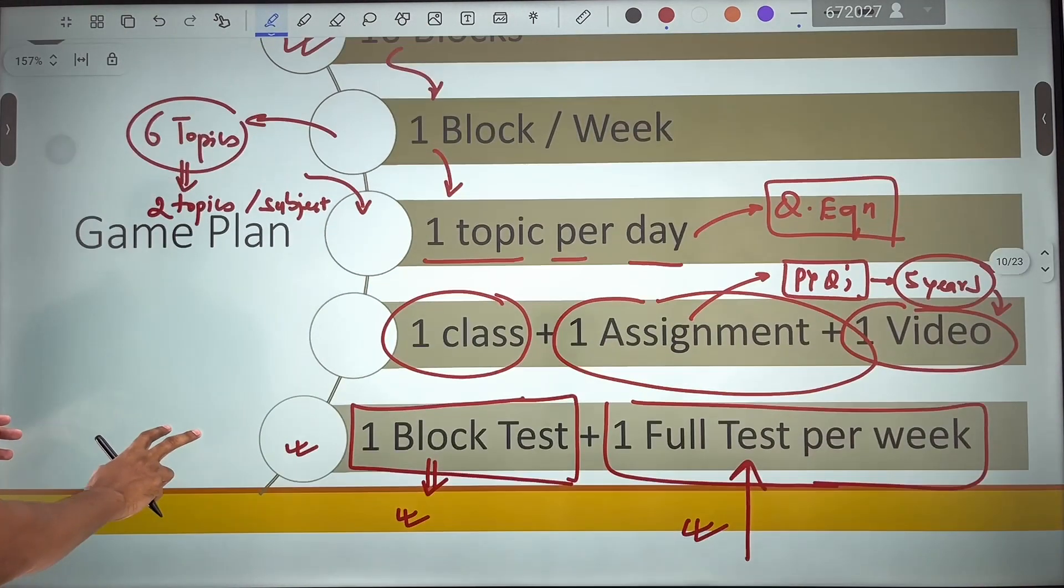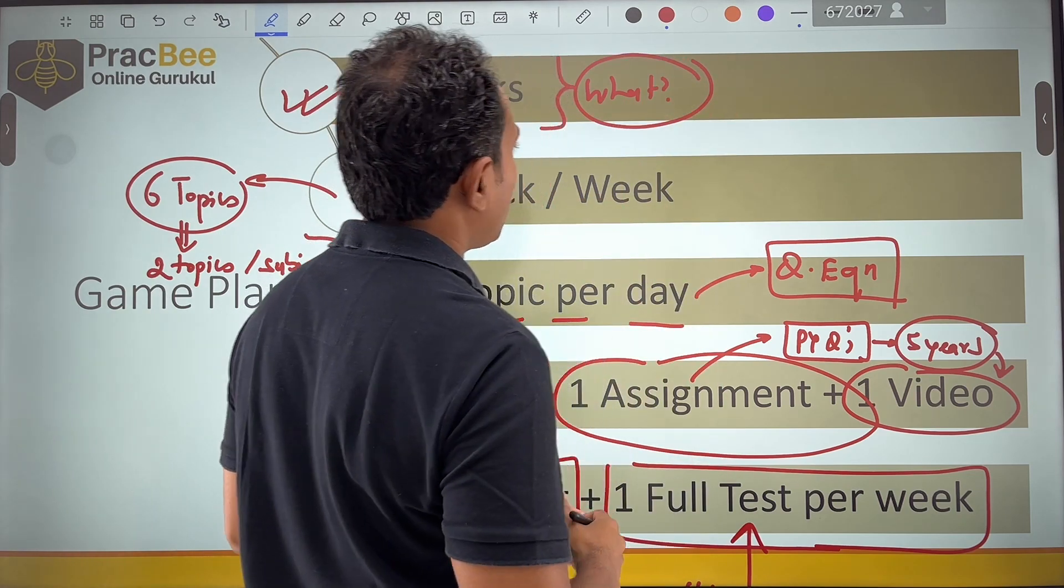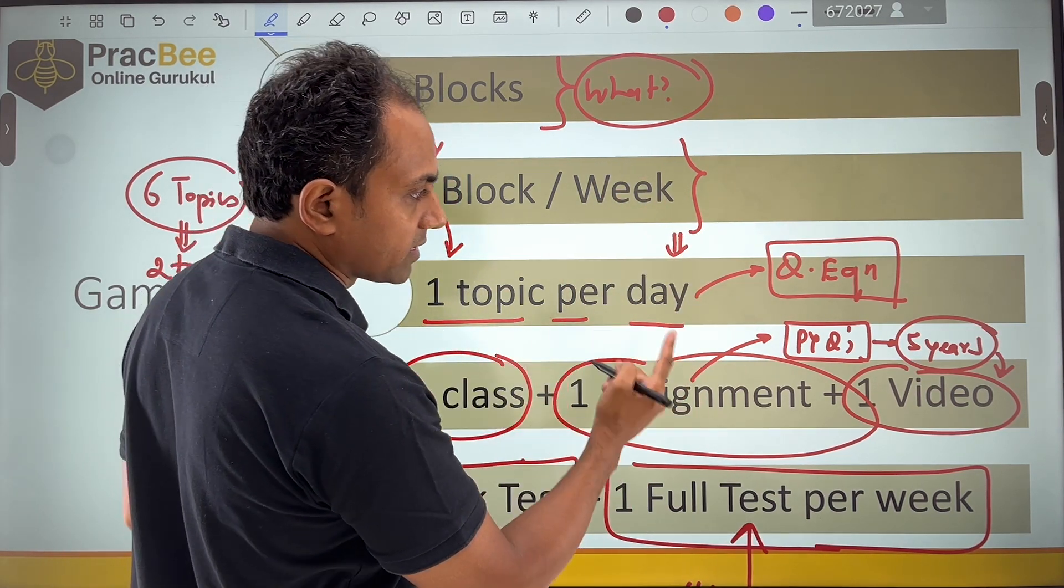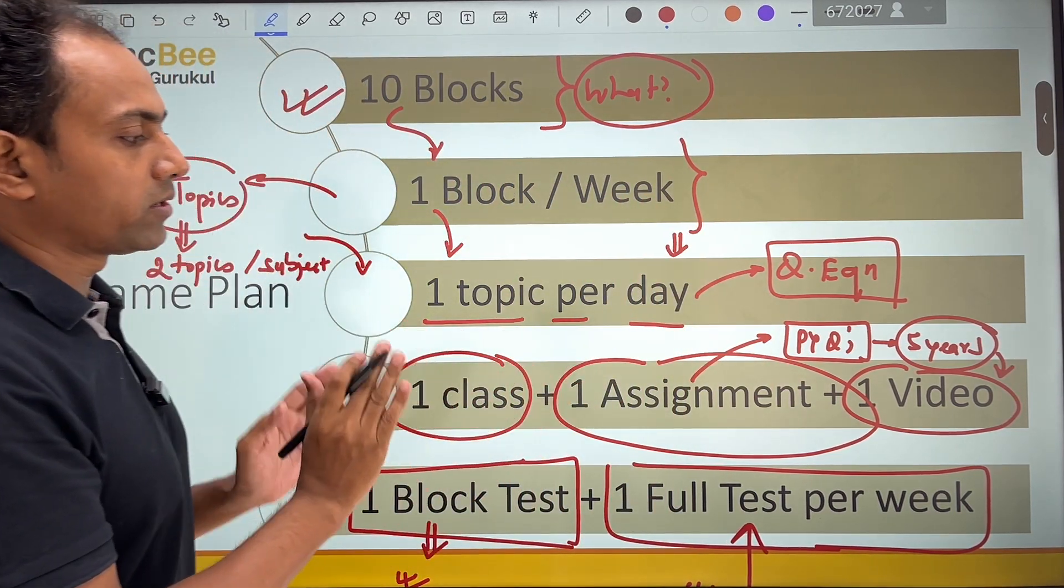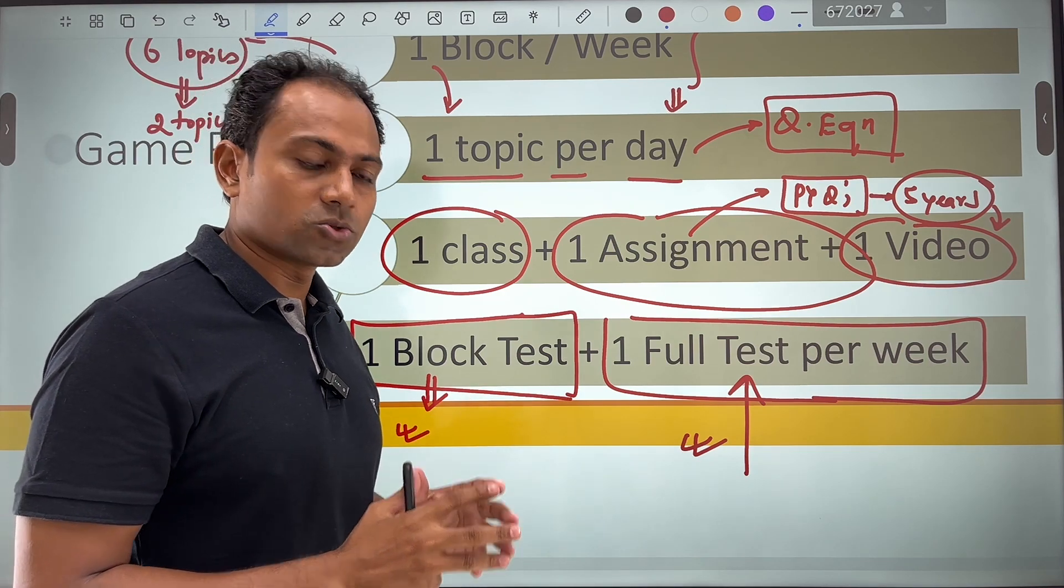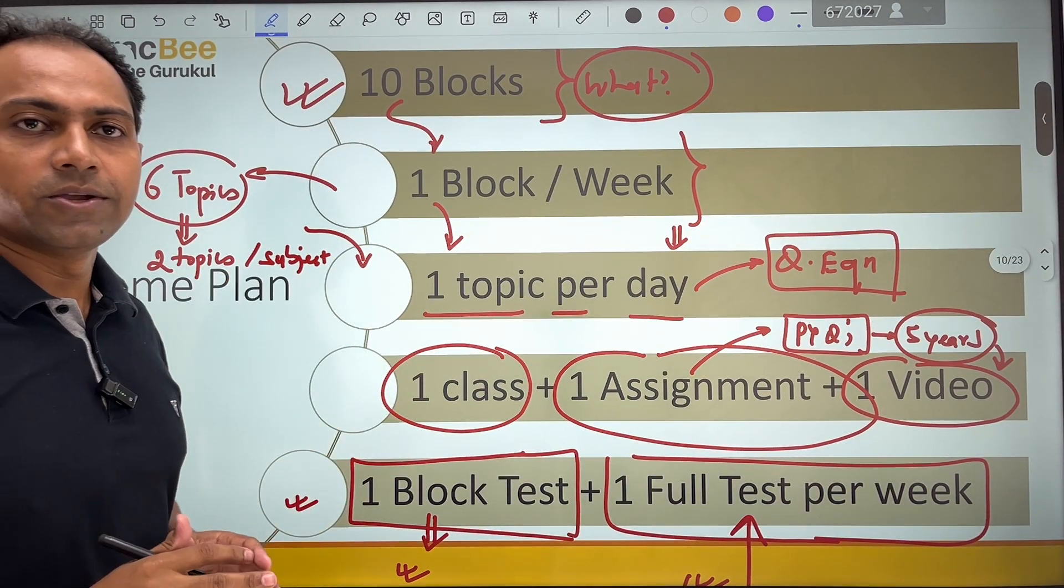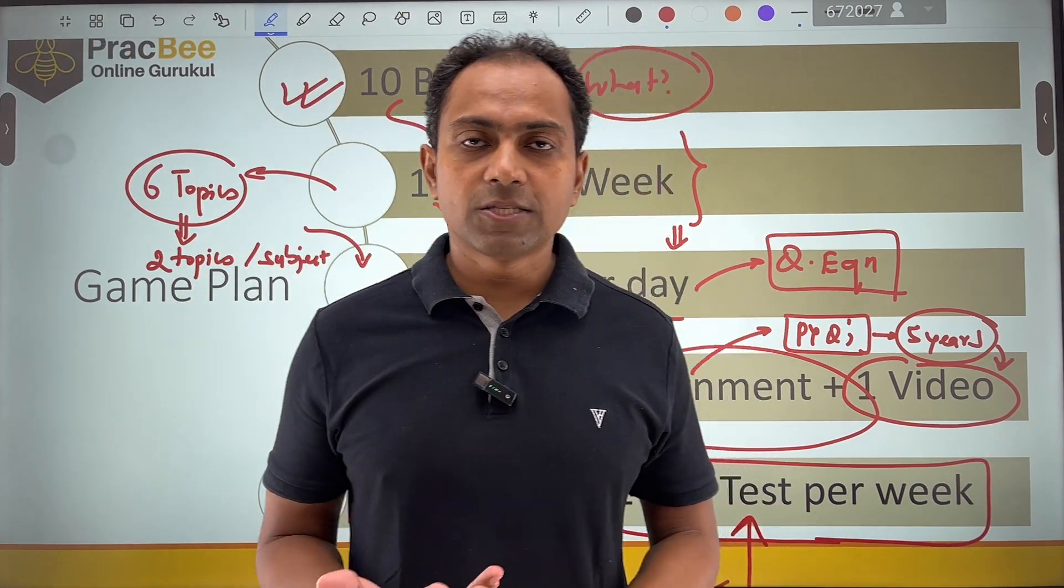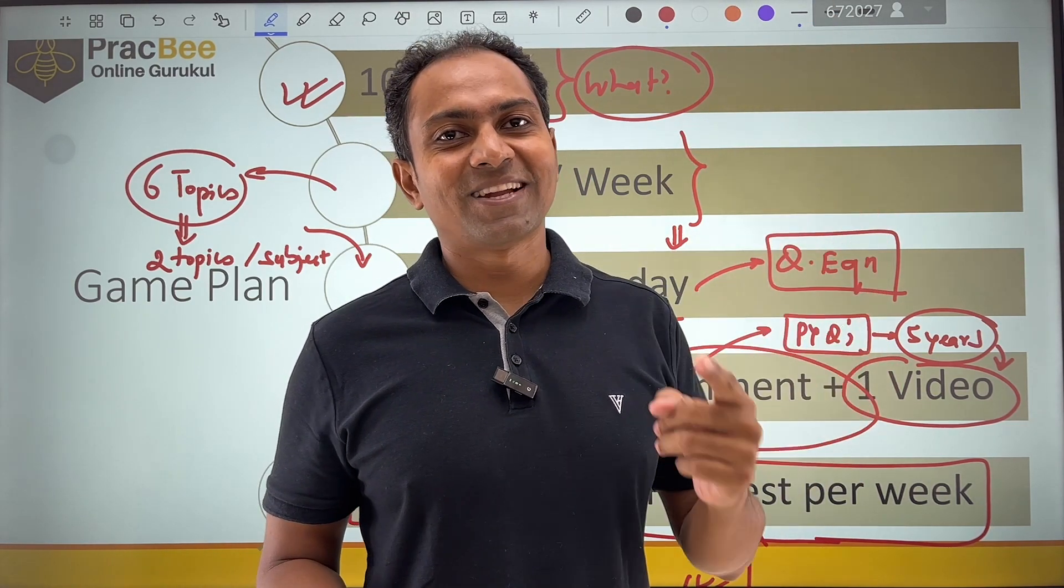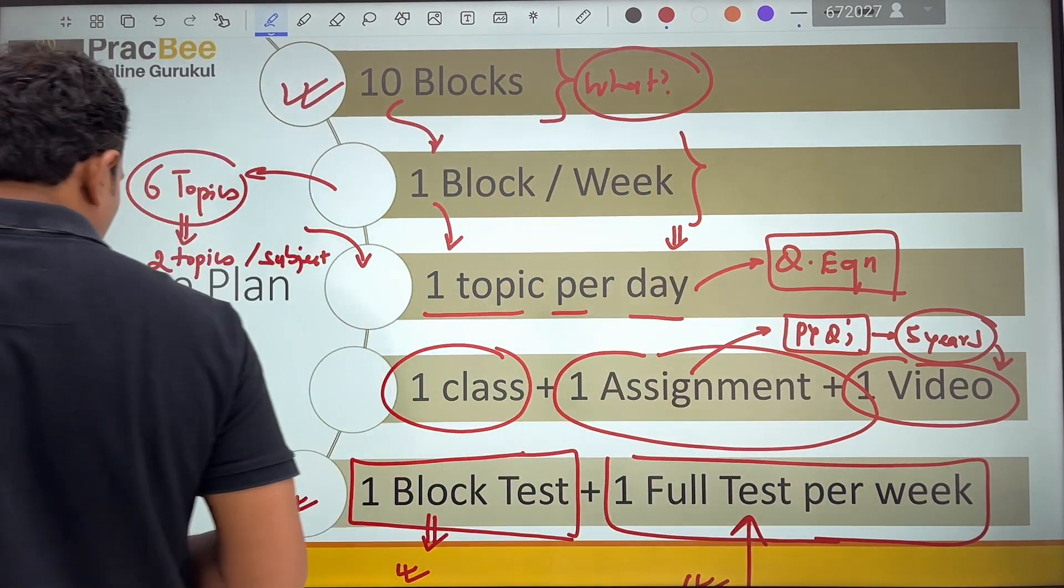Once you have done that, now you have got a comprehensive strategy. I have given you what needs to be done. The blocks need to be prepared in a very systematic manner using weightage of the exam. How to do it in a week? You take one block in a week, break it down into daily targets. Once you have achieved those targets using class notes, assignment based on PYQs, and one-shot video on the Pragbi website, you are largely good to go on that day. Then you can test yourself on the weekly basis by writing a block test on the same set of topics. And write your full syllabus test to understand how your overall preparation is going. These 2 tests, these 3 activities on a daily basis, and these 10 blocks are a bulletproof strategy to crack JEE at this point of time.